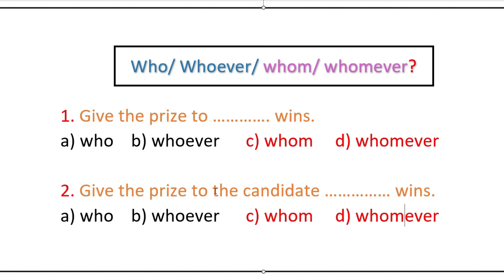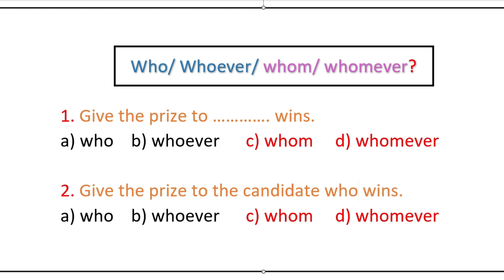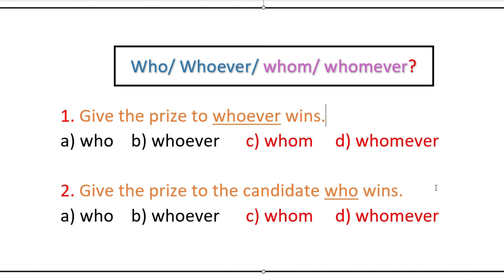Between who and whoever, we check whether there is an antecedent before the relative pronoun. Yes — 'candidate' is the antecedent of 'who.' So the correct answer is 'who': 'Give the price to the candidate who wins.' This is the right answer.